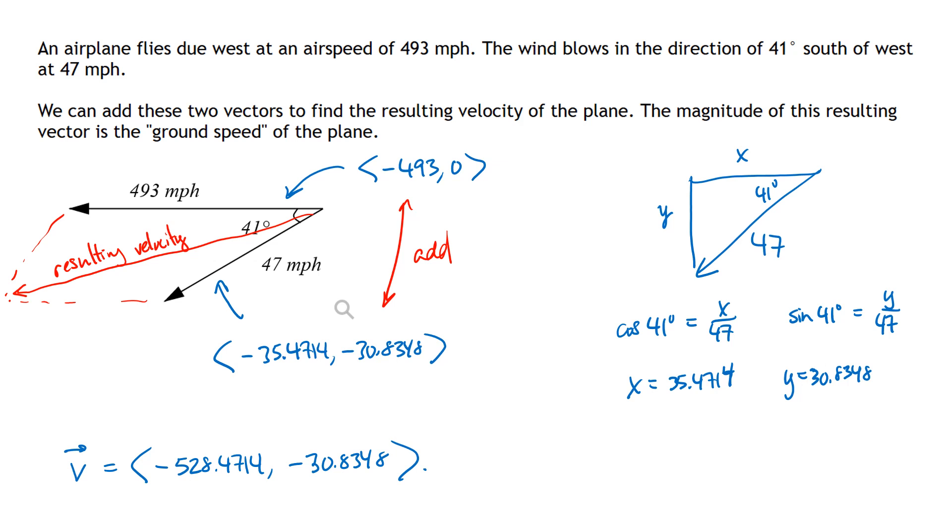Now that doesn't quite specifically answer the question that was asked, because the question is asking, what's the ground speed of the plane? And then what's the bearing of the plane in terms of degrees? But now what we need to do is analyze this resulting velocity vector to answer those questions.